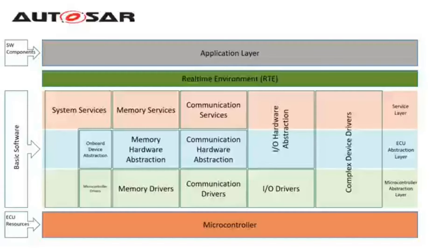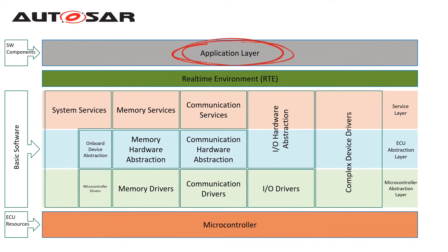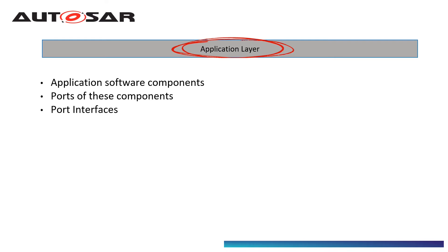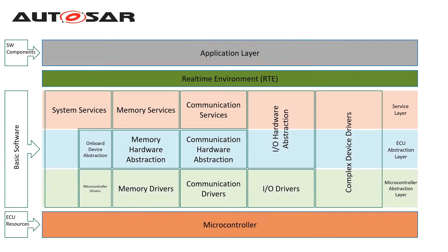Let's understand these layers one by one. First, we have the Application Layer. This layer includes various application-specific components designed to execute a specific set of tasks. Software components are the simplest form of application. The Application Layer is made up of three parts: application software components, ports of these components, and port interfaces.